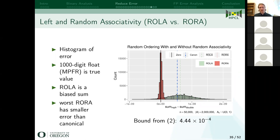This figure is a histogram showing how pessimistic the bound is depending on how you reduce the numbers. I ran this 2 million times on an input of size 50,000, comparing random order with random associativity versus left associativity. For the true answer I ran the experiment with a thousand-digit float — that's close enough, about 1000 digits versus 15 or 16.